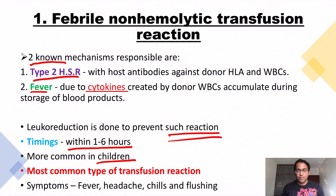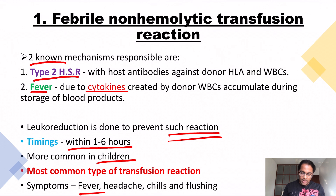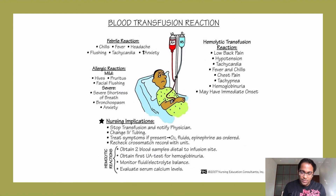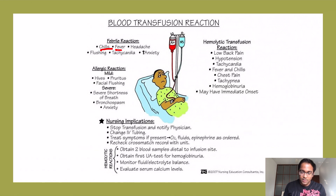What are the symptoms? We have fever because of the preformed cytokines, headache, chills, and flushing. This cartoon shows all the types of reactions, and under febrile reaction you can see chills, fever, headache, flushing, tachycardia, and increased anxiety.